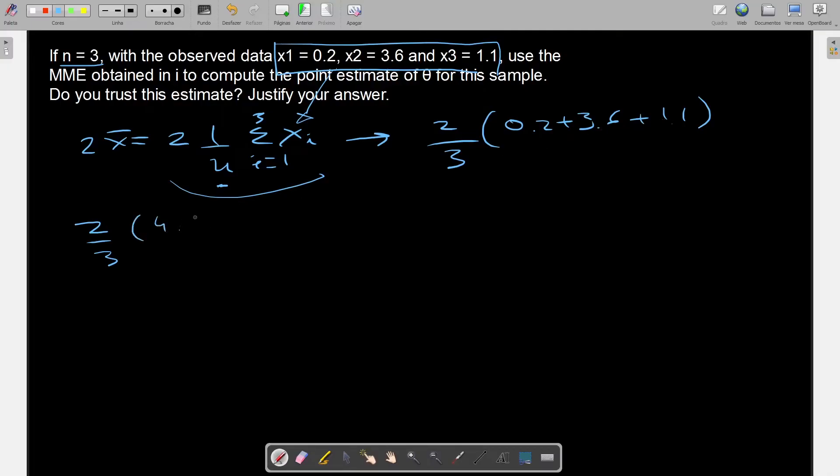So this times 4.9, this will give you a value of 3.27.